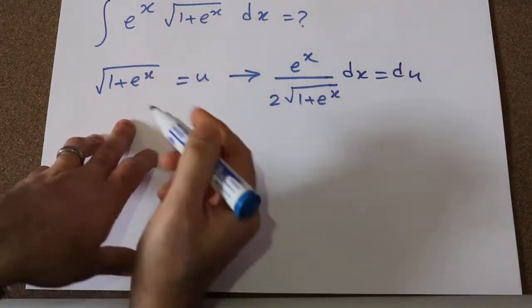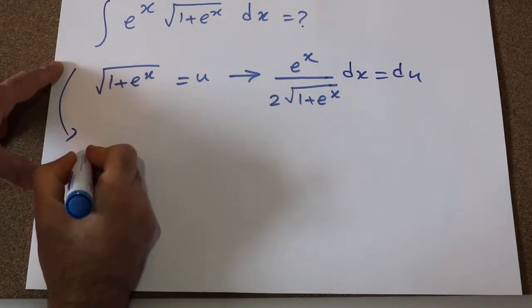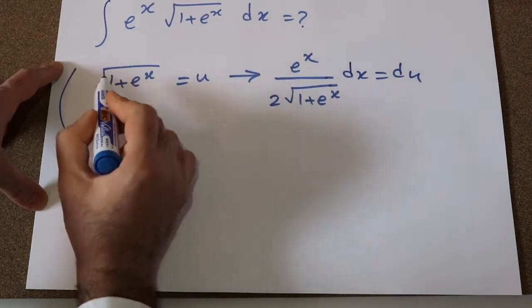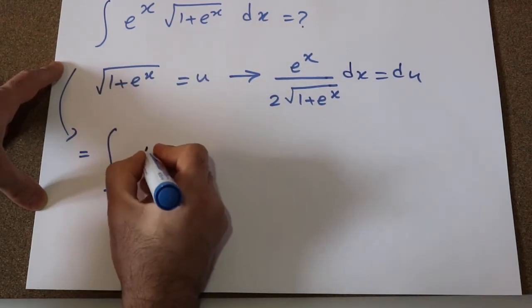So now let's substitute this expression into this integral. Therefore, this integral you can rewrite it as instead of square root of 1 plus e^x, I simply write u.